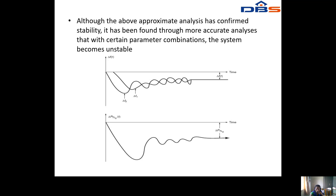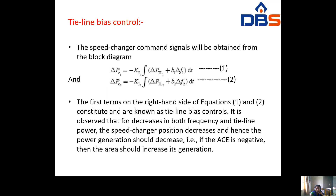Although this approximate analysis confirms stability, more accurate analysis has found that with certain parameter combinations the system may behave differently. The dynamic response waveform of delta F(t) with respect to time shows an oscillatory response initially, which then settles to a stable value after the stabilizing control action takes effect.